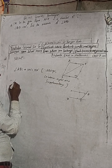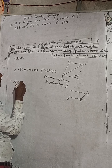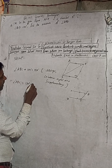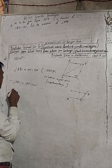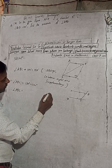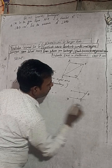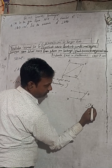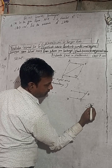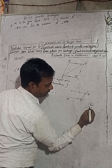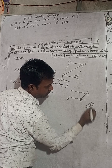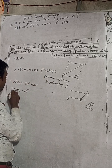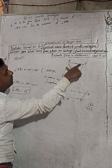Now let's solve this. Angle ABC is equal to 180 degrees minus 114 degrees. So 180 minus 114: 10 minus 4 is 6, and 7 minus 7 minus 1 is 6, giving us 66 degrees. Therefore angle ABC equals 66 degrees.